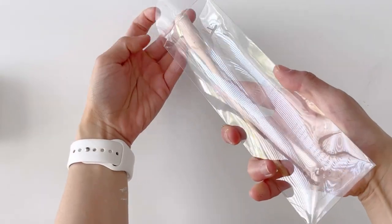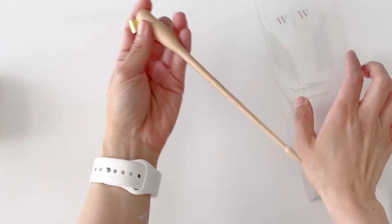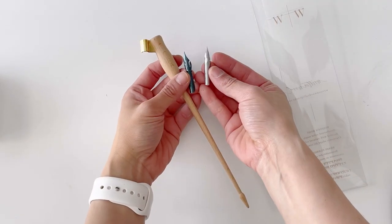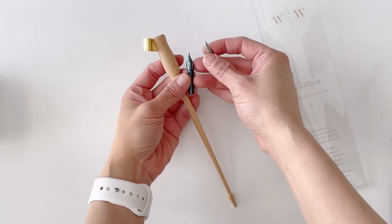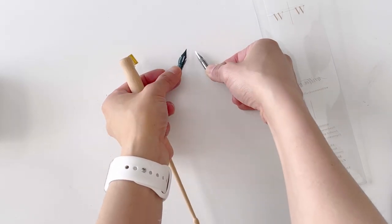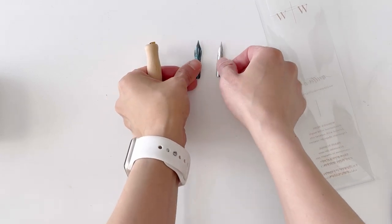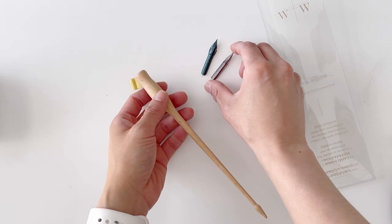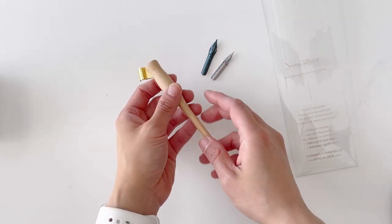Our calligraphy pen is made for modern calligraphy so it fits pointed nibs very well. Pointed nibs come to a point like this and the nibs are flexible so they create thin and thick lines that are characteristic to modern calligraphy. They're also great for copperplate calligraphy and Spencerian, which are both pointed pen types of calligraphy.